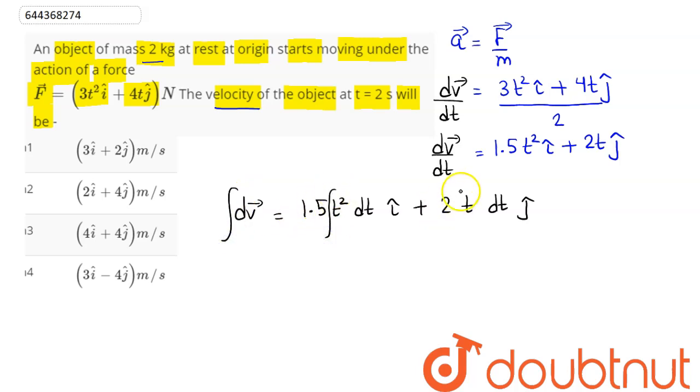Now, integrating this and taking constants 1.5 and 2 outwards, it says at rest at the origin. So, at origin, that is at t = 0, the particle is at rest, and the velocity is being asked at 2 seconds. So, at the upper limit we have 2 seconds for time and the velocity limit is v.